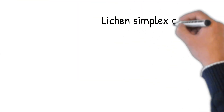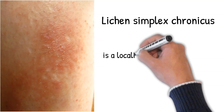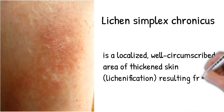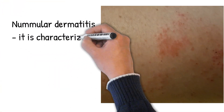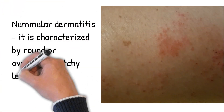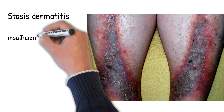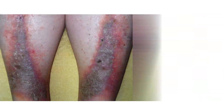Lichen simplex chronicus is a localized, well-circumscribed area of thickened skin — lichenification — resulting from repeated rubbing, itching, and scratching of the skin. Nummular dermatitis is characterized by round or oval-shaped itchy lesions. Stasis dermatitis is caused by insufficient venous return, also known as varicose eczema.